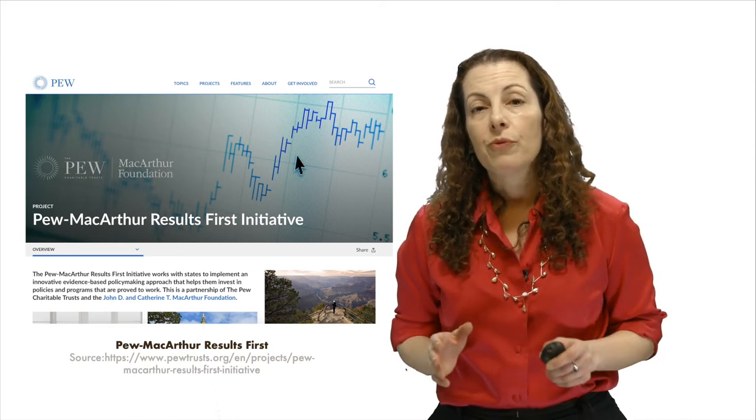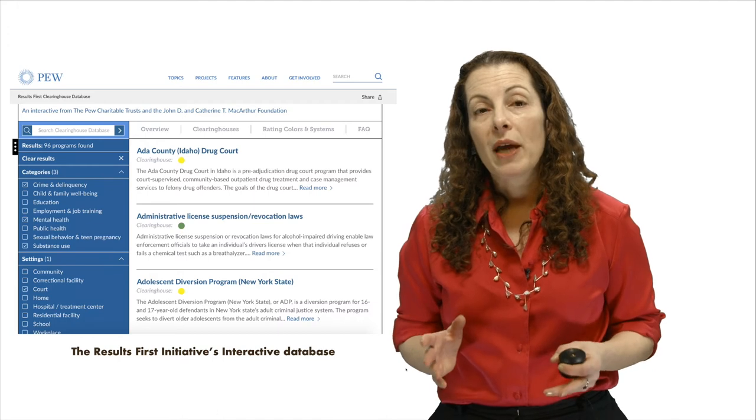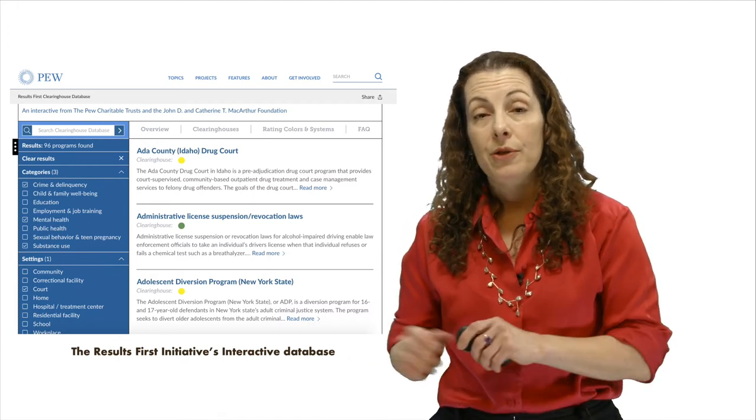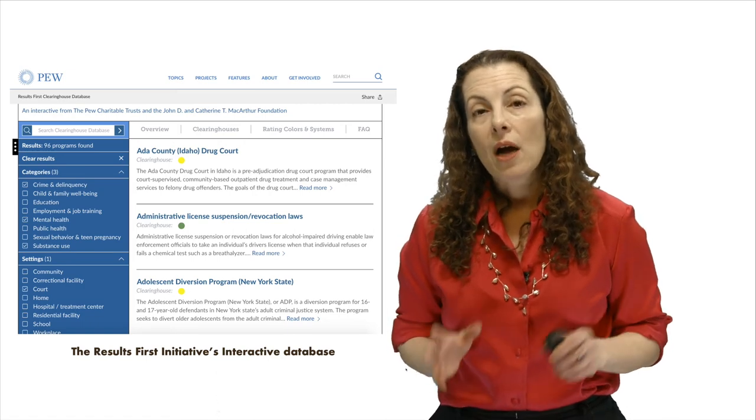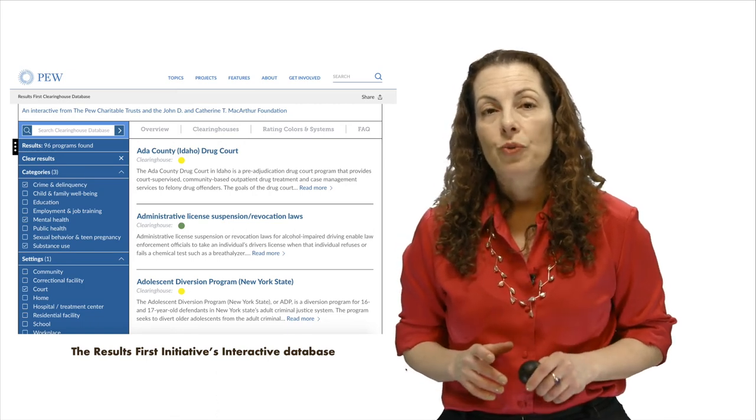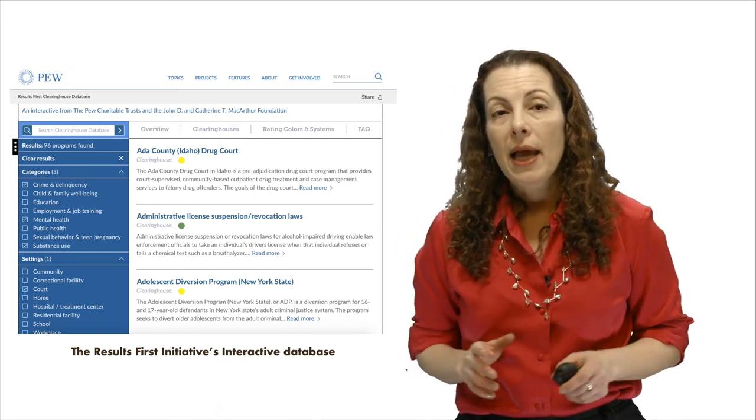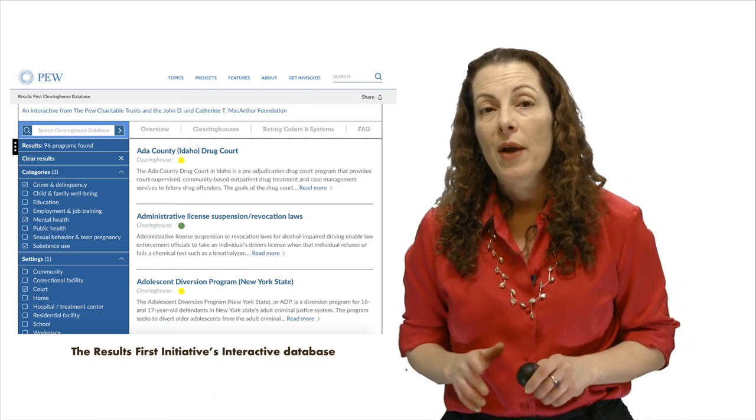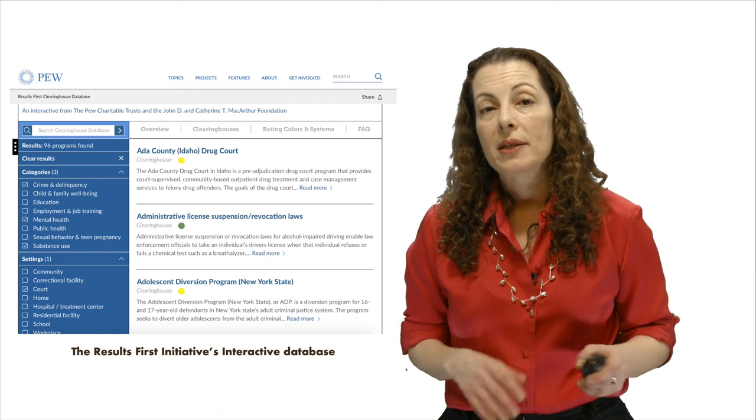Results First is an online resource that brings together information on the effectiveness of social policy programs from nine other national clearinghouses. It applies color coding to the clearinghouses' distinct rating systems, creating a common language that enables users to quickly see where each program falls on a spectrum from negative impact to positive impact.